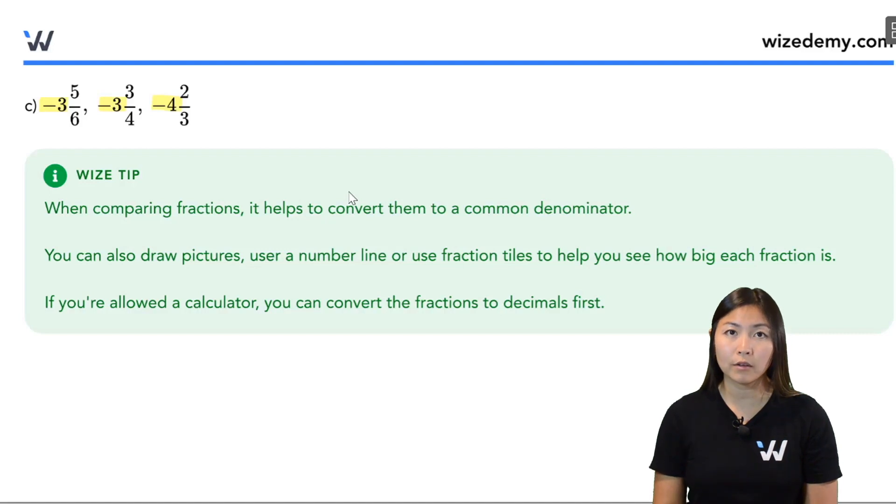So the smallest number, since they're all negative, the smallest number is going to be the biggest looking number, which is negative 4 and a bit. So that's my smallest. Then how about with my other two? Well, now I need to look at the fractions.